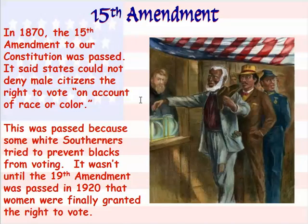Eventually, a third Reconstruction-era amendment was passed: the 15th Amendment, passed in 1870. It stated that states could not deny any male citizen the right to vote based on color or race. This was passed because many white Southerners tried to prevent Blacks from voting by giving them wrong information or outright tricking them. However, this did nothing for women's voting rights, and it wasn't until the 19th Amendment passed in 1920 that women were finally able to vote.